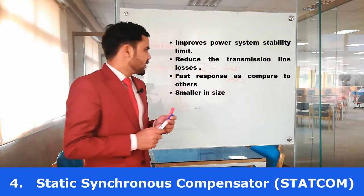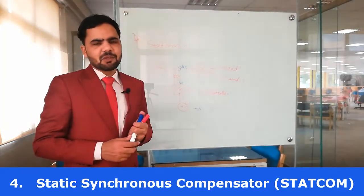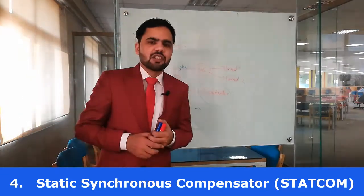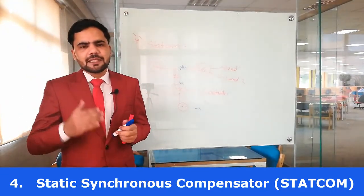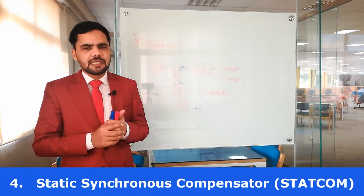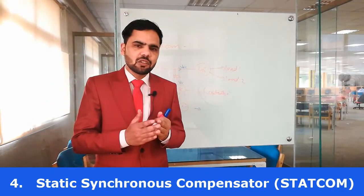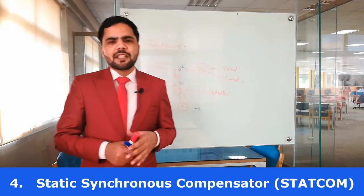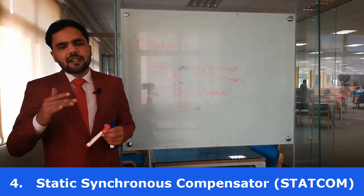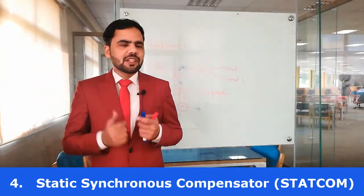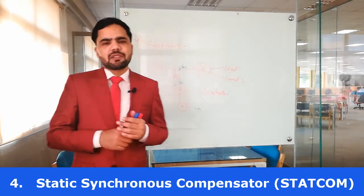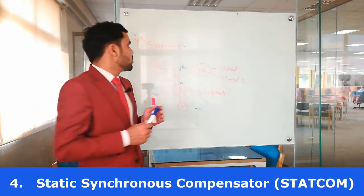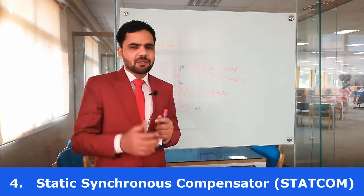This is another important type of the FACTS device that is very commonly used for transmission of power from the generating station to the load. The best location for using the STATCOM is in the center or toward the grid side, because under varying load conditions, it should be able to provide or absorb the reactive power according to the requirement of the power system.